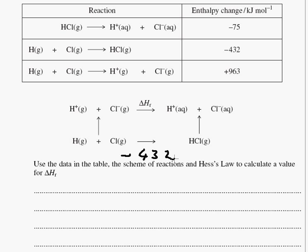What else do we know? Well, from this table, we know that HCl gas going to the ions in solution is minus 75 kilojoules.